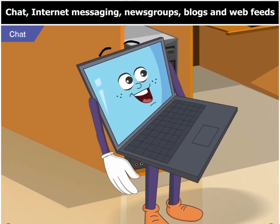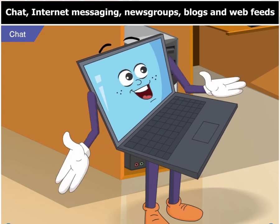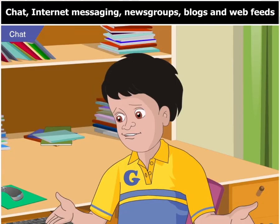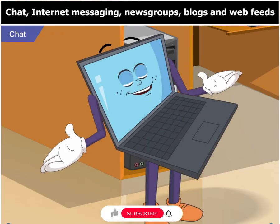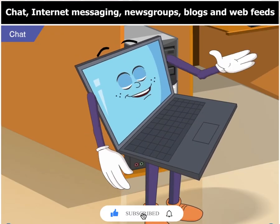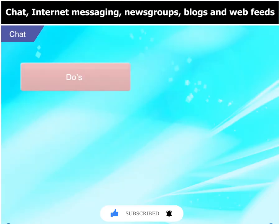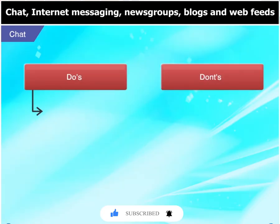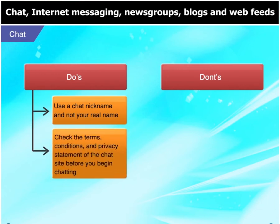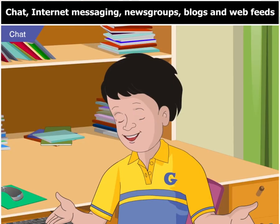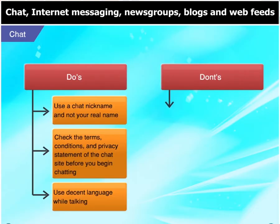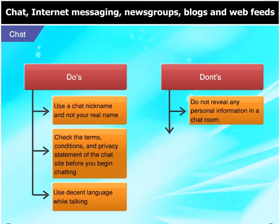However, there are certain rules that you should follow when you chat with strangers. What kind of rules, Toggle? Chatting can be fun and informative. However, there are some do's and don'ts that ensure your safety. While chatting, you must use a chat nickname and not your real name. You should thoroughly check the terms, conditions and privacy statement of the chat site before you begin chatting. Also, always use decent language while talking.